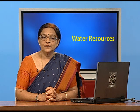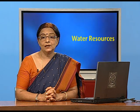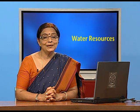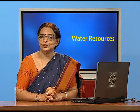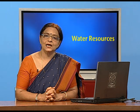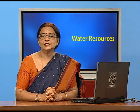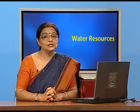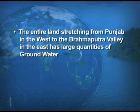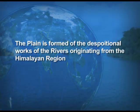Since the northern plains are made up of soft rocks, percolation is much greater there compared to the southern plateau, which is made up of hard rocks. The entire stretch from Punjab in the west to the Brahmaputra Valley in the east forms a long stretch of northern plains made up of sedimentary rocks, formed by the depositional work of rivers originating from the Himalayan region.